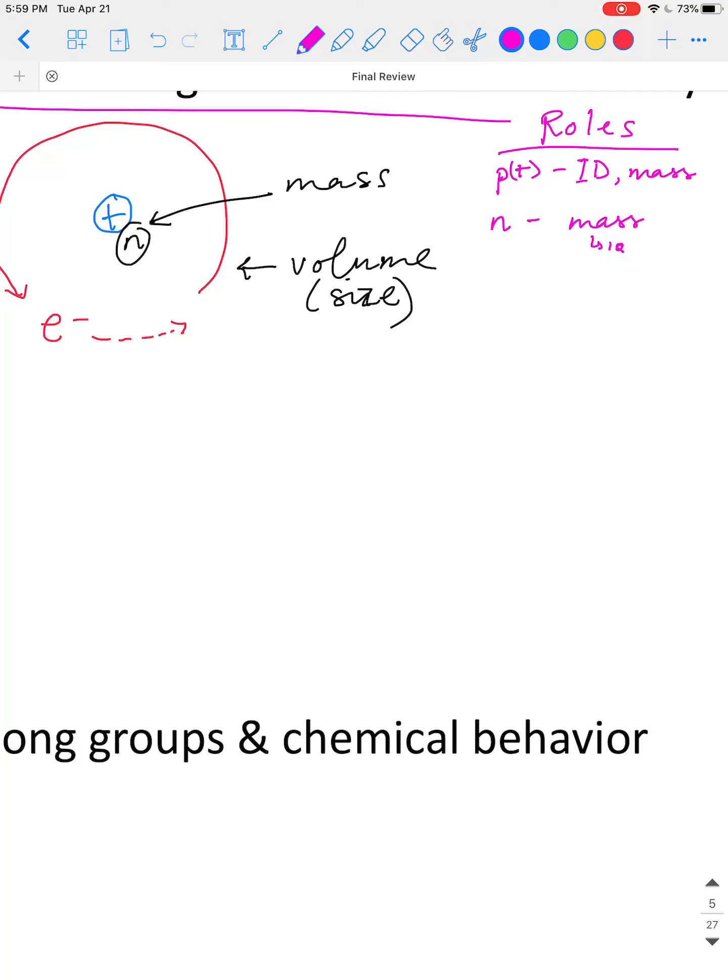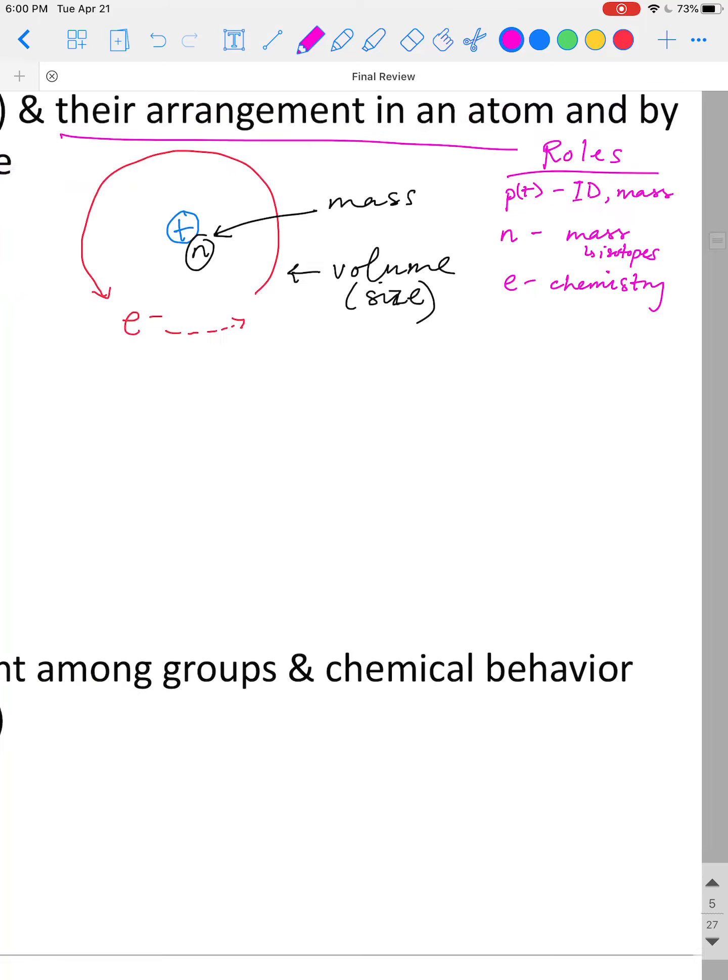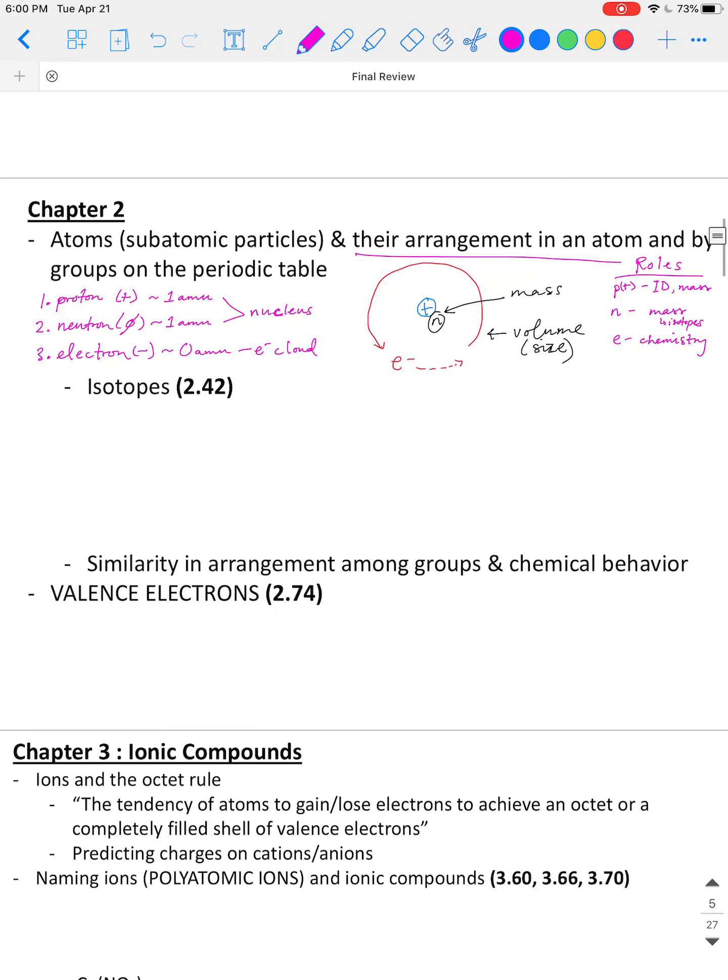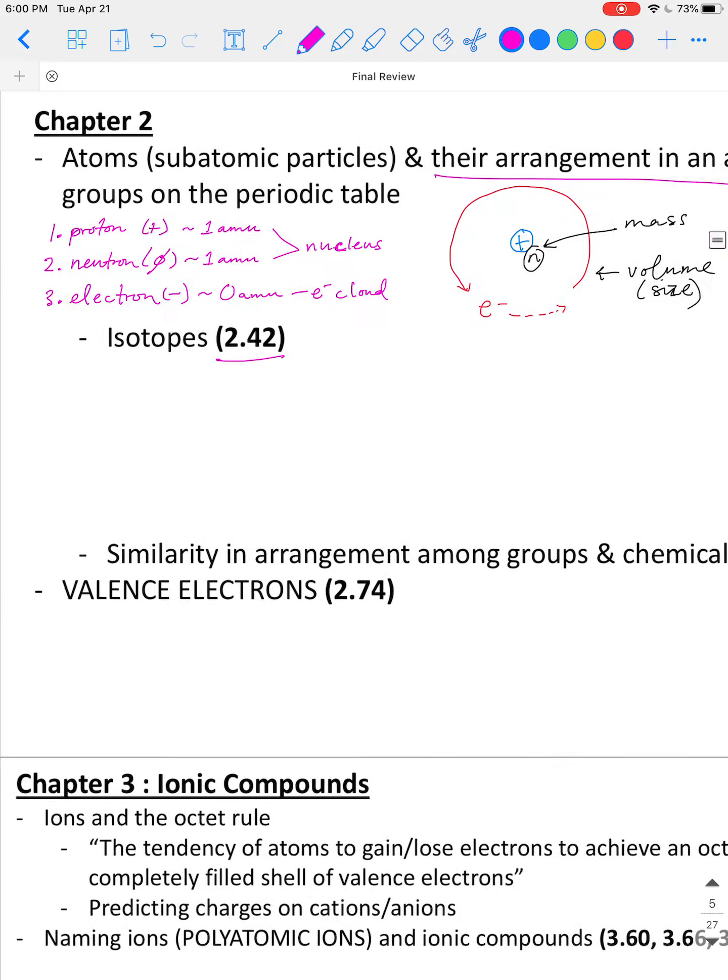Neutrons contribute to the mass of an atom. And they can be important for isotopes, which we are getting to in just a minute. And electrons, these are what are responsible for the chemistry of an atom.